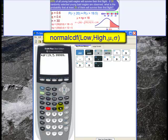The mean is 18, so comma 18, and the standard deviation is about 2.68, so 2.68, and close the parentheses, and I hit enter.